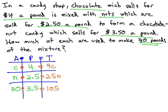Because we have two variables, we need two equations, which can come from the first column, showing the amount of chocolate plus the amount of nuts is equal to 30 pounds. And the last column, which shows our investments of 4C plus 2.5N, is equal to our total investment of 105.